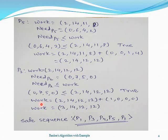In this way, we find the safe sequence as P1, P3, P4, P5, and P2. In this sequence, we are allocating the resources to each process, and the system goes into the safe state.